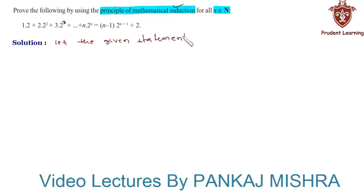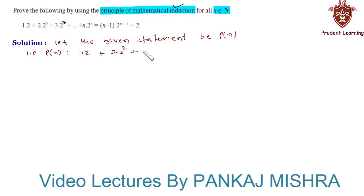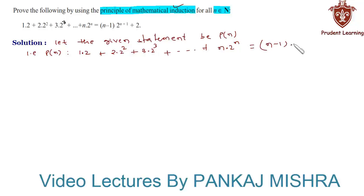Let the given statement be P(n), that is: P(n) such that 1·2 + 2·2² + 3·2³ + ... + n·2ⁿ = (n−1)·2^(n+1) + 2.